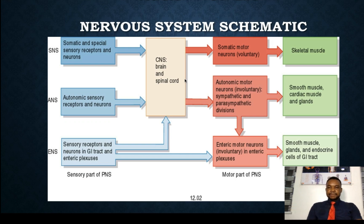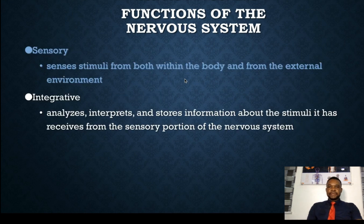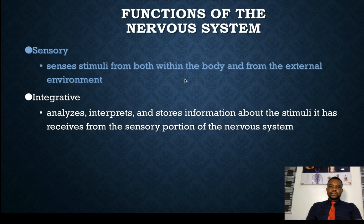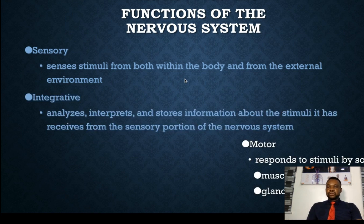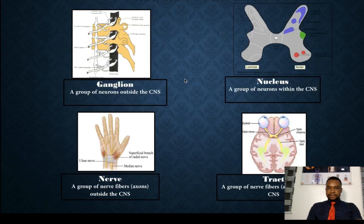This is a schematic representation. Generally, the nervous system receives sensory information from the special senses and from the external environment into the brain. This sensory information is being interpreted and integrated, and the response is sent back to the body through the motor system. So generally, those are the parts and the functions of these systems.